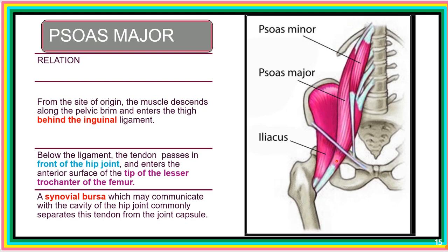As it passes deep to the inguinal ligament, running to its insertion at the lesser trochanter of the femur, it passes through the hip joint. As it does this, it will have a synovial bursa between it and the capsule of this joint. Sometimes there is a communication between the joint and this synovial bursa, and sometimes there may not be. This muscle runs across the anterior surface of the hip joint as it runs to its insertion.